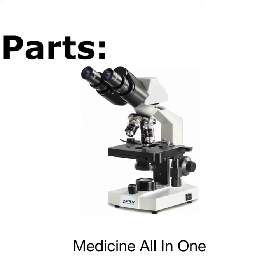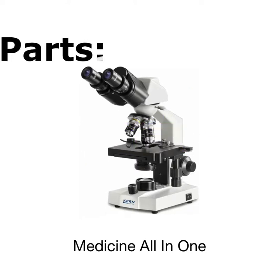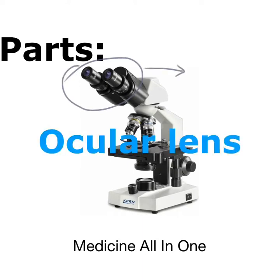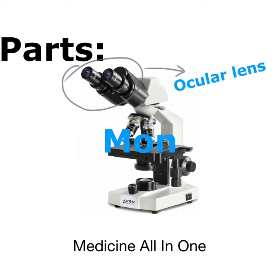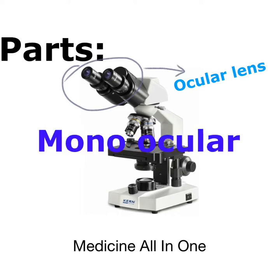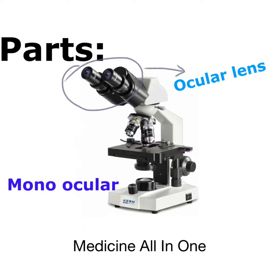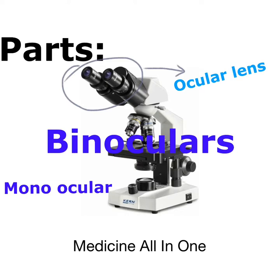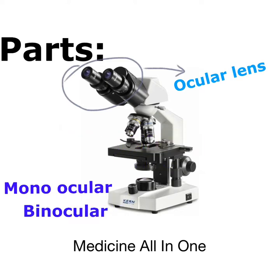Now we will discuss each and every part of the microscope in detail. First, the eyepiece — it is basically a small tube that contains a lens which further enlarges the image produced by the objective. A microscope that contains one eyepiece is known as monocular.